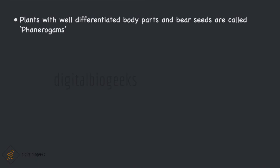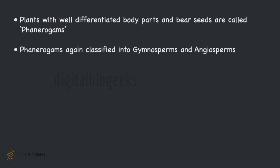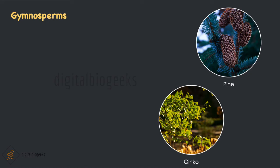Plants with well-differentiated reproductive parts that ultimately bear seeds are called phanerogams. They have reproductive structures and as a result they produce seeds. Seeds consist of an embryo along with stored food. This stored food helps in the growth of the embryo during germination. The development of a plant from a seed is called germination. Phanerogams are again classified on the basis of whether their seeds are naked or enclosed in a fruit: gymnosperms have naked seeds and angiosperms have seeds enclosed in a fruit.